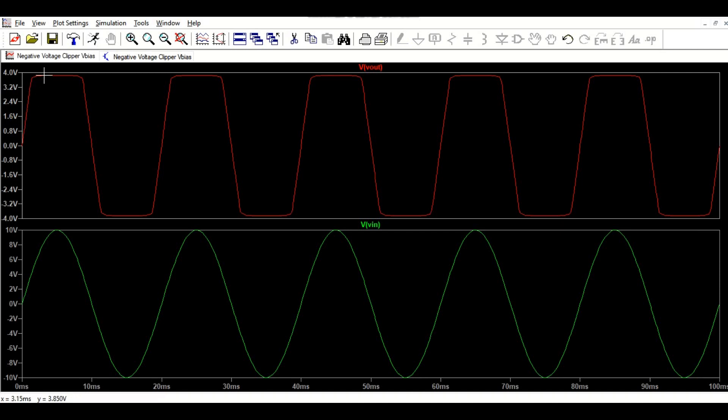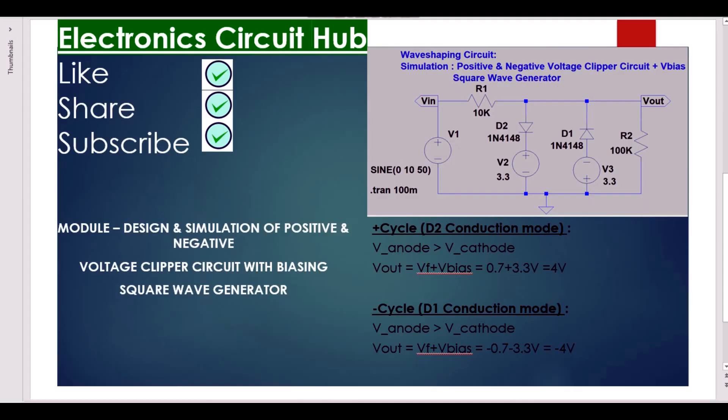You can see what was your theoretical value - the theoretical value for this circuit was 4 volts for positive half cycle and minus 4 volts for negative half cycle. The same output you are getting here.